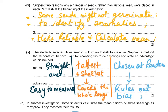In part 4, suggest two reasons why a number of seeds, rather than just one seed, were placed in the Petri dish at the beginning of the investigation. Well, of course, some seeds might not germinate, just as I mentioned at the beginning, then to identify anomalies. If you only had one seed and that didn't grow, you would think this is the condition which is not very helpful in germination. Some seeds might not germinate, then to identify the anomalies, and more reliable and calculate the mean. You repeat experiments to make the results more reliable and so that you can calculate the mean and remove the anomalies.